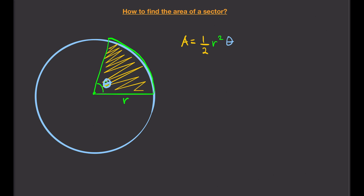Let's say, for example, R equals 2 and θ equals 45 degrees. Now, just like with arc lengths, it is important to note that the angle must be in radians. Since this is in degrees, we need to convert it to radians first.